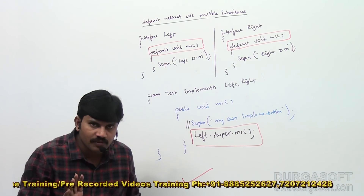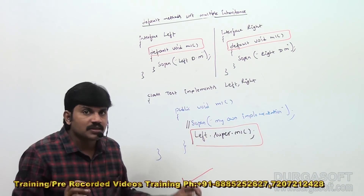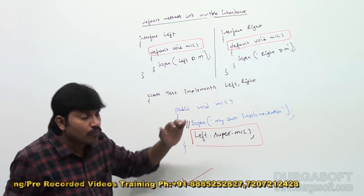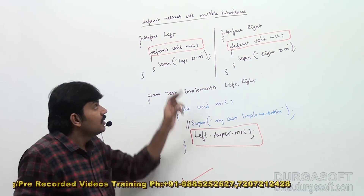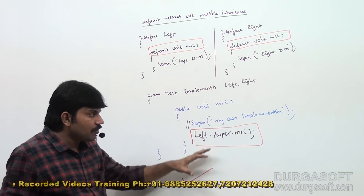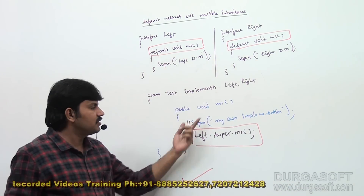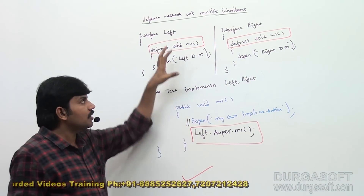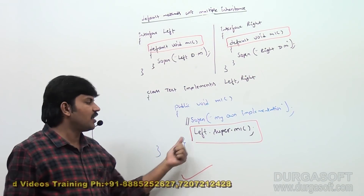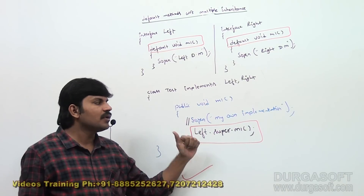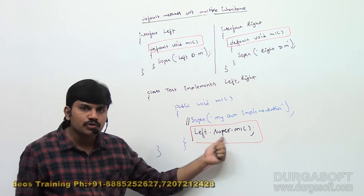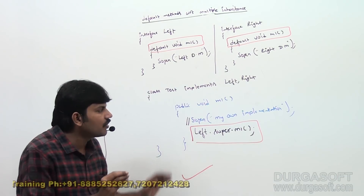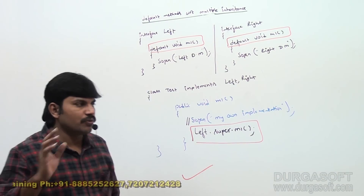So the problem is solved by default. To override a default method in the implementation class, just like normal — or if you want a particular interface's method, use `Left.super.m1()`. Clear for all of you. Let me execute this code.